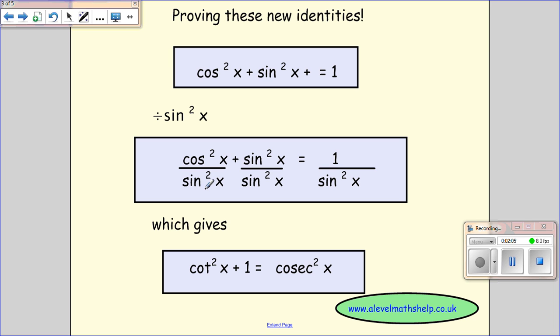Cos squared over sin squared is the same as cot squared x, because that's like 1 over tan squared x. Sin squared over sin squared cancels to 1. And 1 over sin squared x gives me cosec squared.